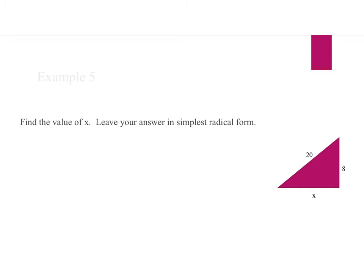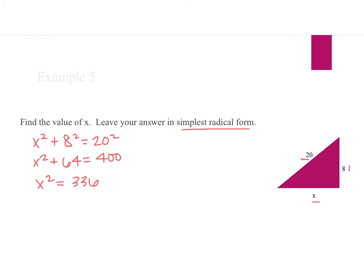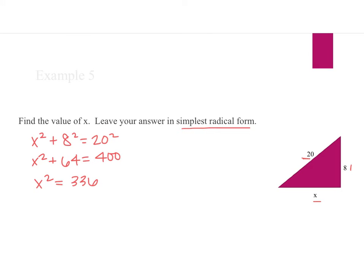In example 5, we find the value of x and leave our answer in simplest radical form. I have a leg and a leg, so x squared plus 8 squared equals the length of the hypotenuse, 20 squared. Simplifying, I get x squared plus 64 equals 400, so x squared equals 336. To get x by itself, I square root both sides, leaving x equals the square root of 336.